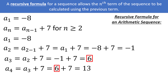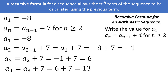In general, we can write out an arithmetic sequence in recursive form by first stating a sub 1, and then stating that a sub n is equal to a sub (n minus 1) plus d, for n greater than or equal to 2. And yes, it will always be for n greater than or equal to 2, unless you have a finite sequence that gets cut off somewhere.